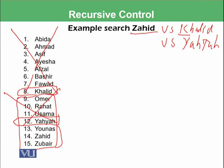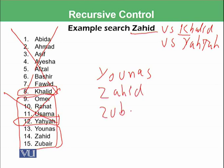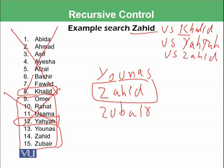In the third step we have only Yunus, Zahid, and Zubair. Again we find the midpoint, which is Zahid. When this Zahid is compared with our query Zahid, the ASCII values of both are equal. So we found our match.